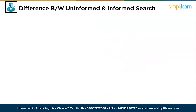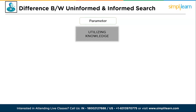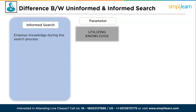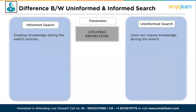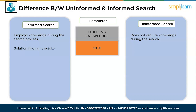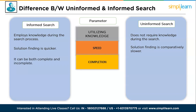Let's see some differences between informed and uninformed search. The first parameter is utilizing knowledge: informed search employs knowledge during the search process, while uninformed search does not require knowledge. The second parameter is speed: informed search finds solutions more quickly, while uninformed search is comparatively slower. The third parameter is completion: informed search can be both complete and incomplete, while uninformed search is always bound to be complete.